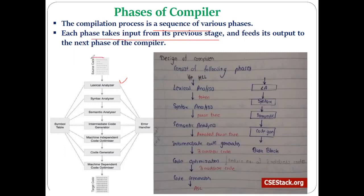Each phase takes input from its previous phase, generates output, and gives that output as input to the next phase. The first phase is the lexical analyzer, which takes source code in a higher-level language as input and generates tokens. In the lexical analysis unit, we covered what the lexical analyzer is, its role, how it generates tokens, lexical errors, the automatic tool LEX, and how patterns and regular expressions are used to recognize tokens.